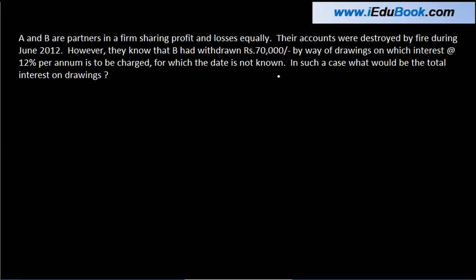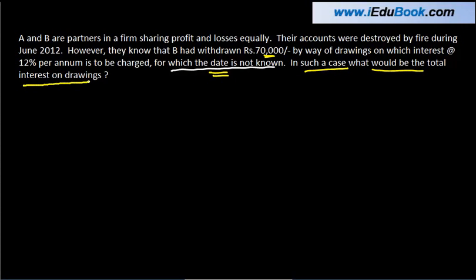Let's see how you calculate interest on drawings when you are not aware of the date of drawings. A and B are partners in a firm sharing profits and losses equally. Their accounts were destroyed by fire during June 2012. However, they know that B had withdrawn Rs. 70,000 by way of drawings, on which interest at the rate of 12% per annum is to be charged, but the date is unknown. So while we know B has withdrawn 70,000, we don't know the date on which such withdrawal was made. In such a case, what would be the total interest on drawings?